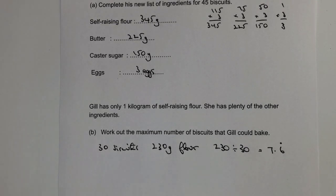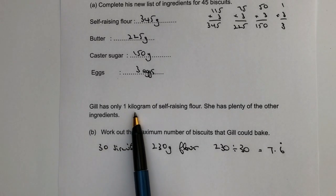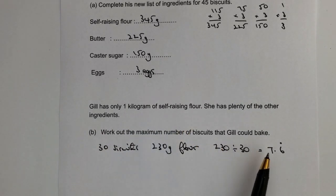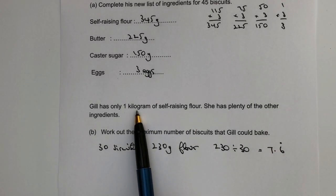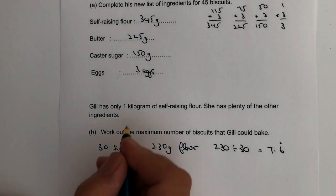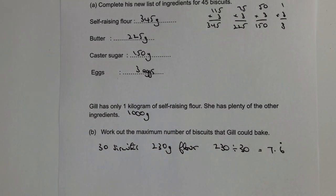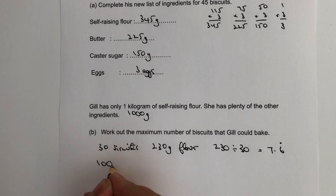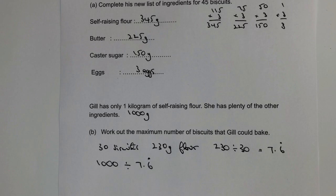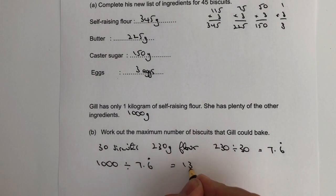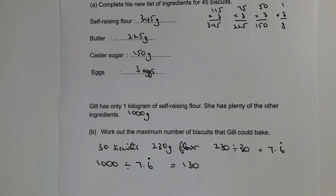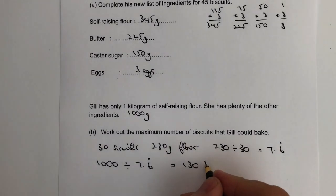To work out how many biscuits Jill can make from one kilogram of self-raising flour, we note that one kilogram equals 1000 grams. So the calculation is 1000 divided by 7.6 recurring, which works out at just over 130. But since she's making whole biscuits, not fractions of a biscuit, the answer is 130 biscuits.